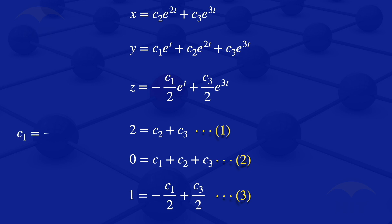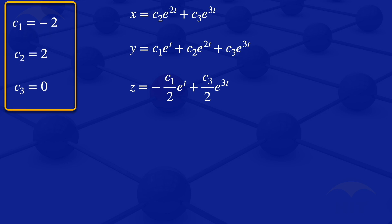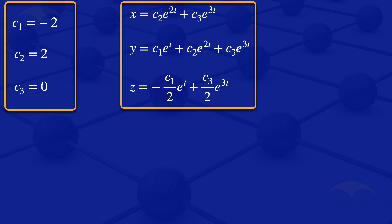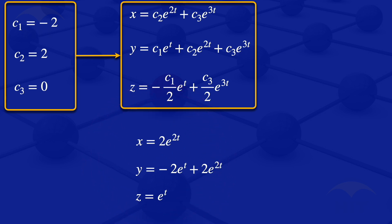Solving equations one, two, and three simultaneously, we get c1 equals minus 2, c3 equals 0, and c2 equals 2. Substituting these constants back into the expressions, the final solution is: x equals 2*e^(2t), y equals minus 2*e^t plus 2*e^(2t), and z equals 2*e^t. That is the solution of the system of ODEs given the initial conditions.